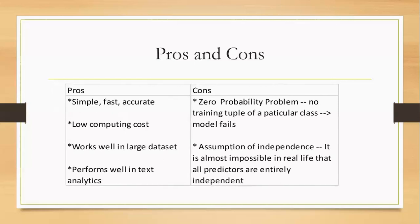Okay, so pros and cons. The pros of Naive Bayes: it's simple, it's fast, it's accurate. And it has no computing cost. Since it's simple and the algorithm is not complex, there wouldn't be too much strain on our computers. Third, it works well with large datasets.